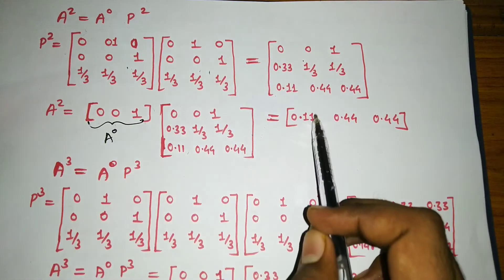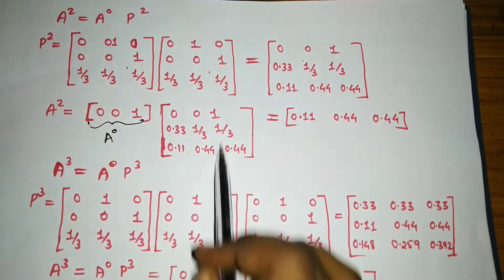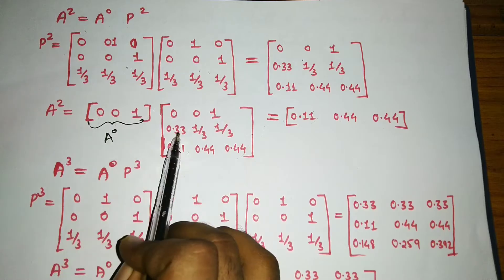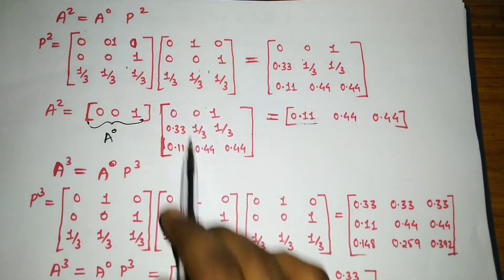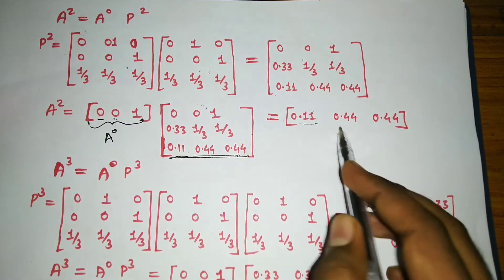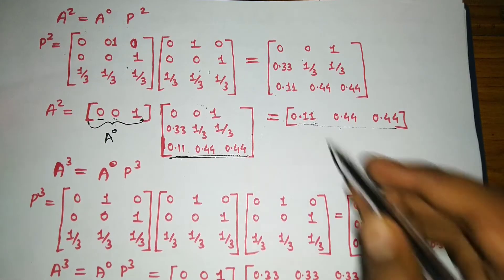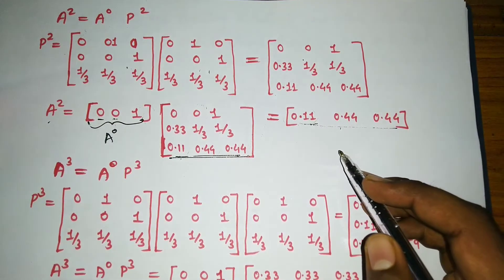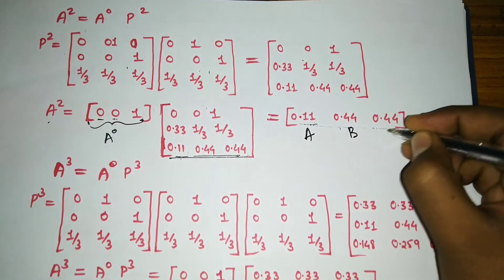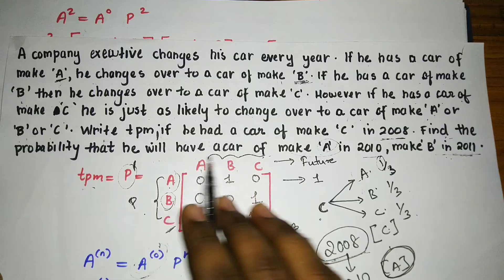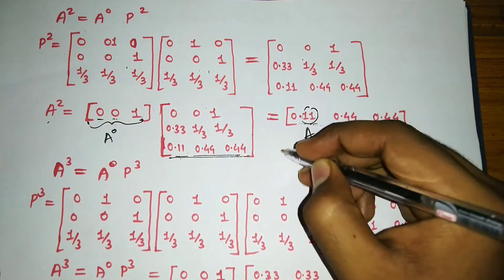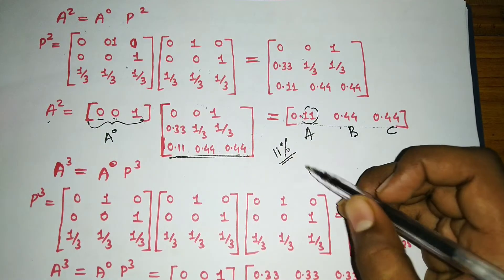Multiplying row into column: 0×(first column) + 0×(second) + 1×(third row) gives us the values directly. For a², we get the probabilities for brands A, B, and C. The probability of having brand A in 2010 is 0.11, which is 11%. So the probability that he will have a car of brand A in 2010 is 11%.